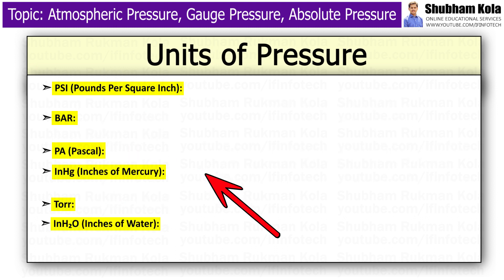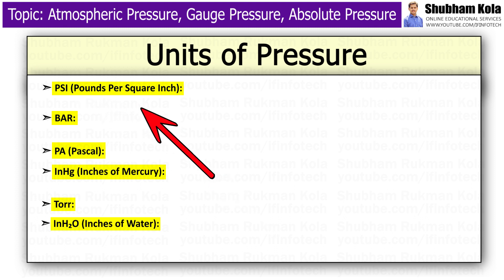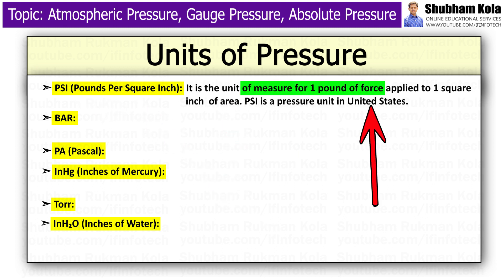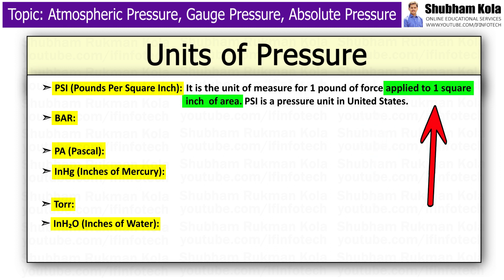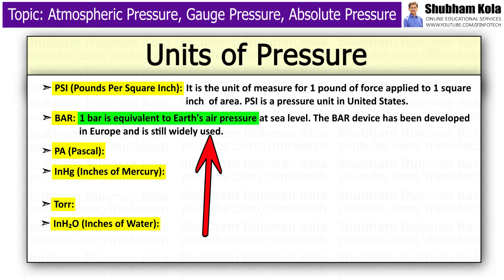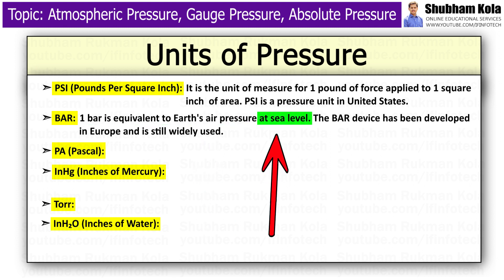We will now see the units of pressure. The first is psi, that is pounds per square inch, which is the unit of measure of one pound of force applied to one square inch of area. Next is bar. One bar is equivalent to Earth's air pressure at sea level.